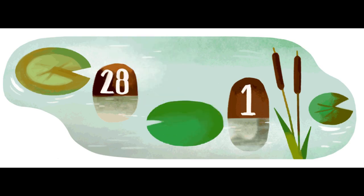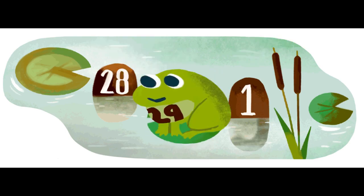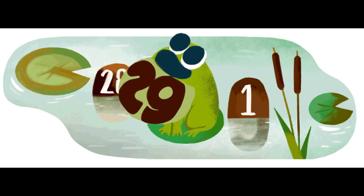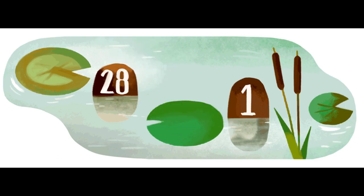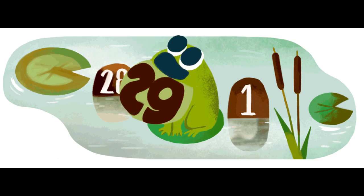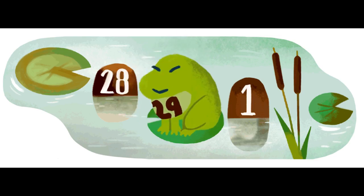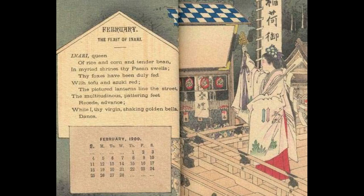There are a few interesting things to note about Leap Day. Not every year that is divisible by four is a leap year — years divisible by 100, but not by 400, are not leap years. For example, 1900 was not a leap year, but 2000 was.